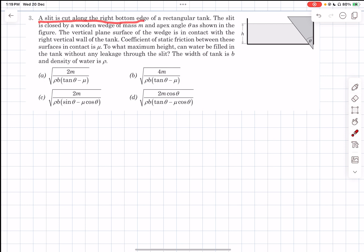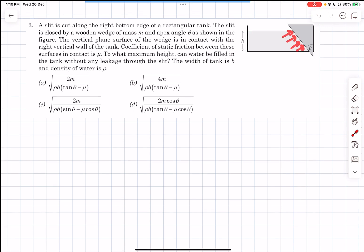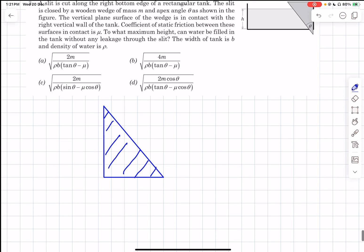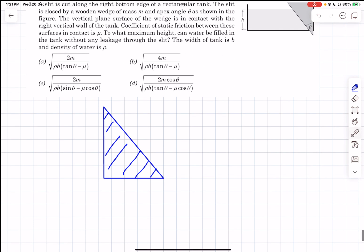So we have a slit that is cut along the right bottom edge that is over here of a rectangular tank. The slit is closed by a wooden wedge of mass M and apex angle theta as shown in the figure. The vertical plane surface of the wedge is in contact with the right vertical wall of the tank. And there is friction over here. And the friction coefficient is given to be mu. To what maximum height can the water be filled in the tank without any leakage through the slit? So as we increase the height of the water, due to the water pressure, there will be a force on the cone. And once the vertical component of this force becomes greater than the limiting friction over here, this wedge would be raised. And as a result, water would be leaked. So they're asking that particular height at which that would happen.